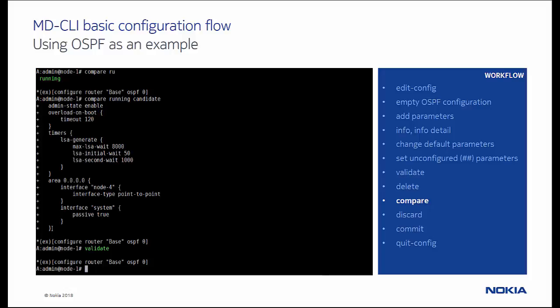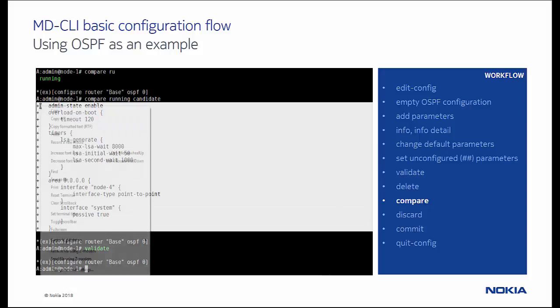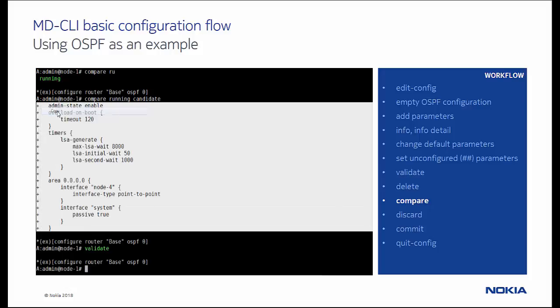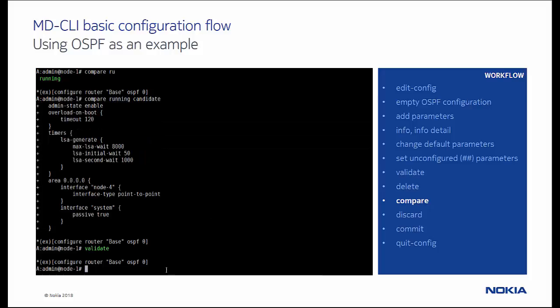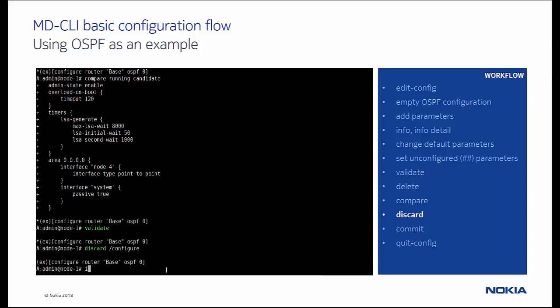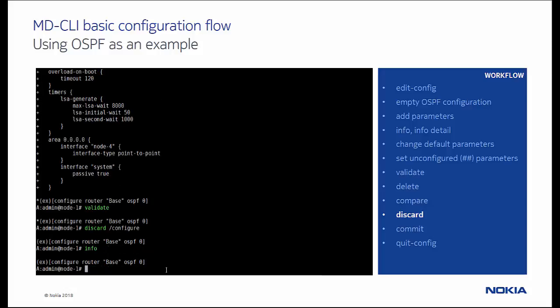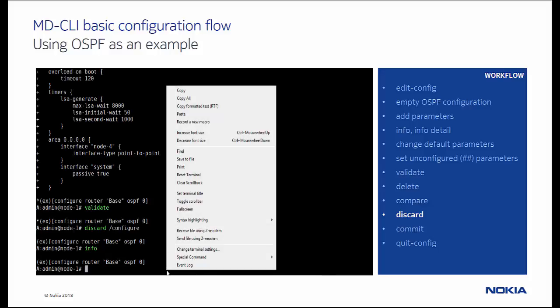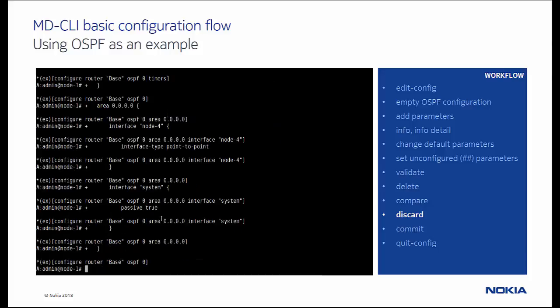Before we commit the candidate configuration, let's demonstrate how you can copy-paste configuration snippets. Multiple formats can be used for this, such as info, info full context output, but also compare output, as used in this example. So let's first discard all changes using the discard command, then we can restore our OSPF changes by pasting them back.